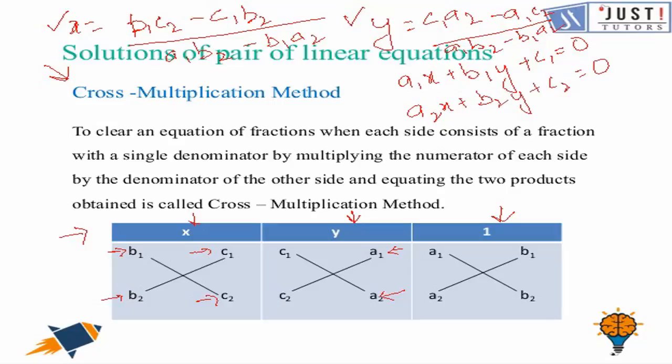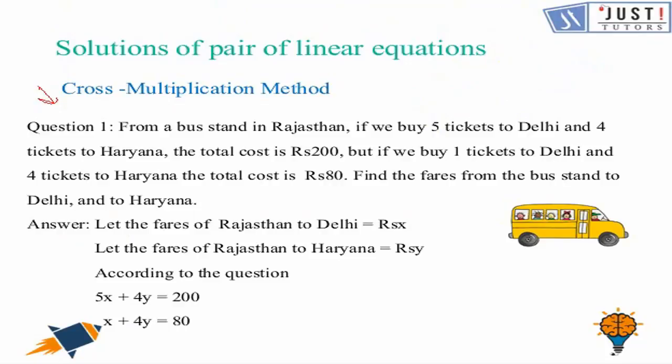Now we will try a question. From a bus stand in Rajasthan, if you buy 5 tickets to Delhi and 4 tickets to Haryana the total cost is rupees 200, but if you buy 1 ticket to Delhi and 4 tickets to Haryana the total cost is rupees 80. We need to find the fares from the bus stand to Delhi and to Haryana. Let the fare to Delhi be x rupees and to Haryana be y rupees. So the equations are: 5x plus 4y equals 200, and x plus 4y equals 80. We will solve this using the cross multiplication method.